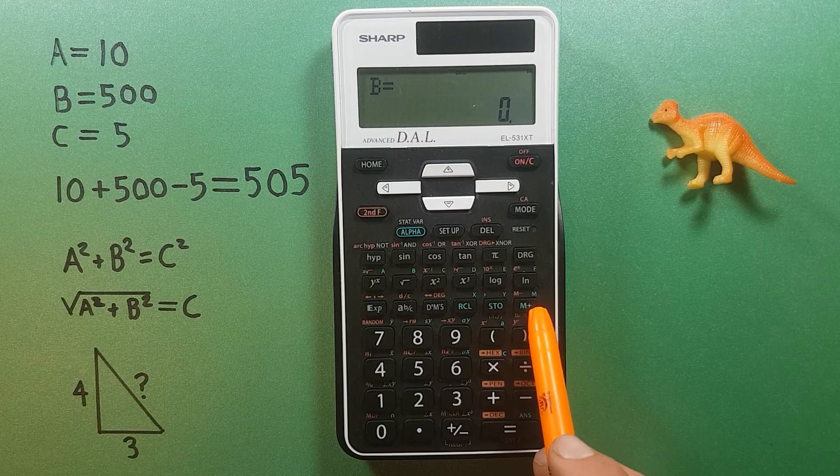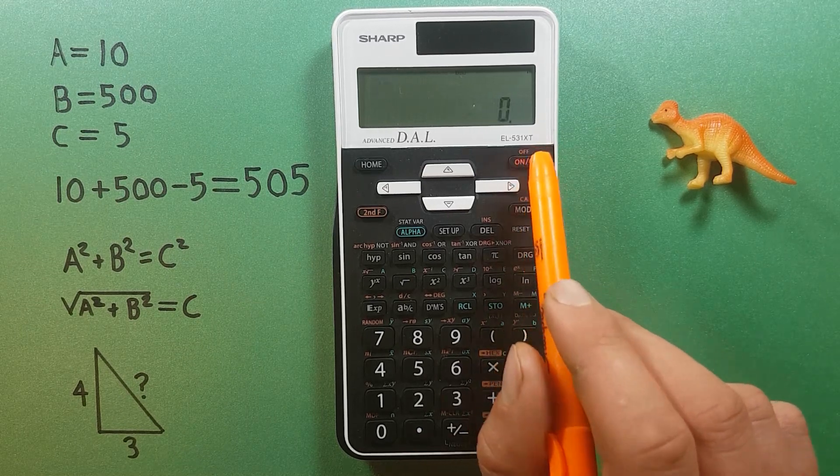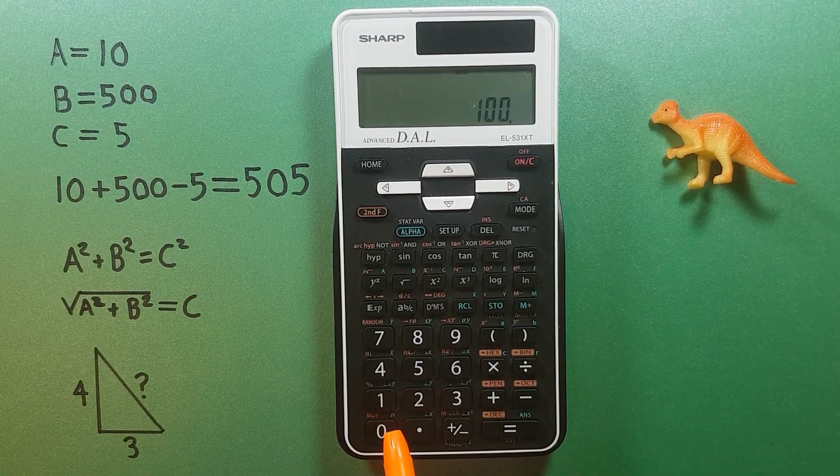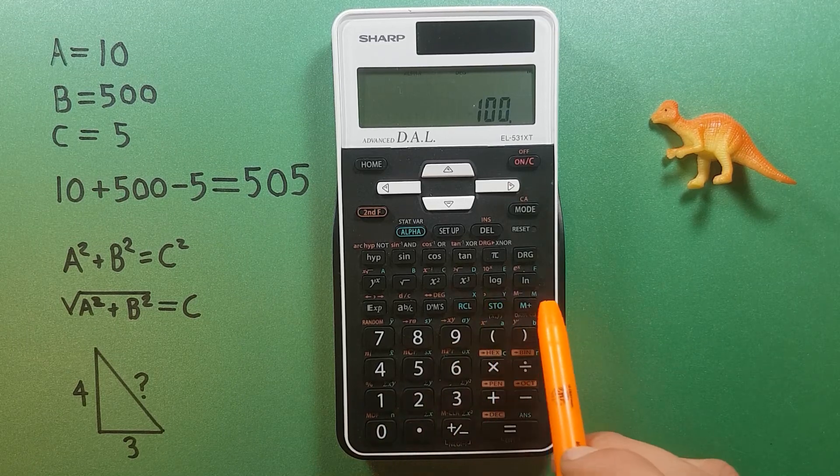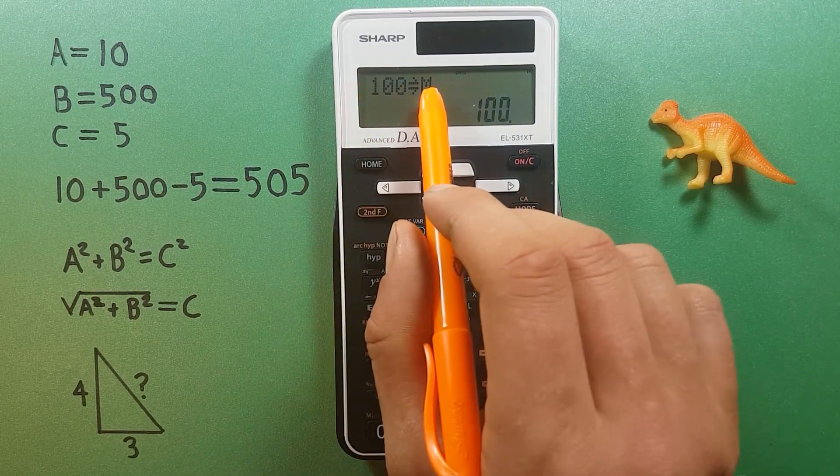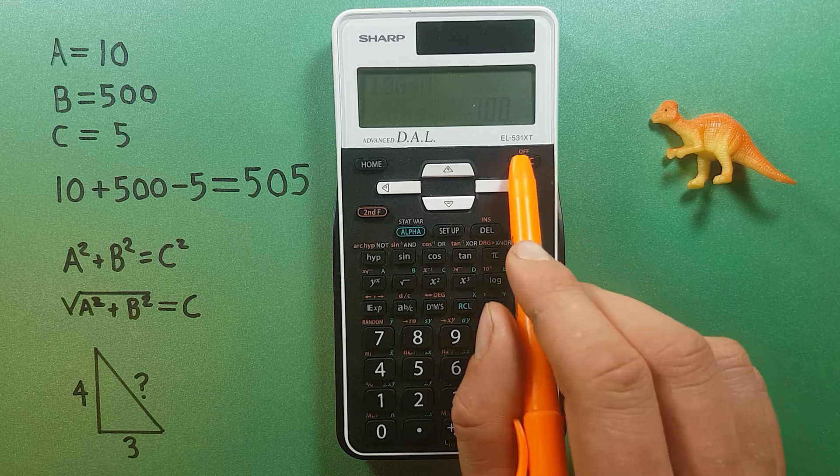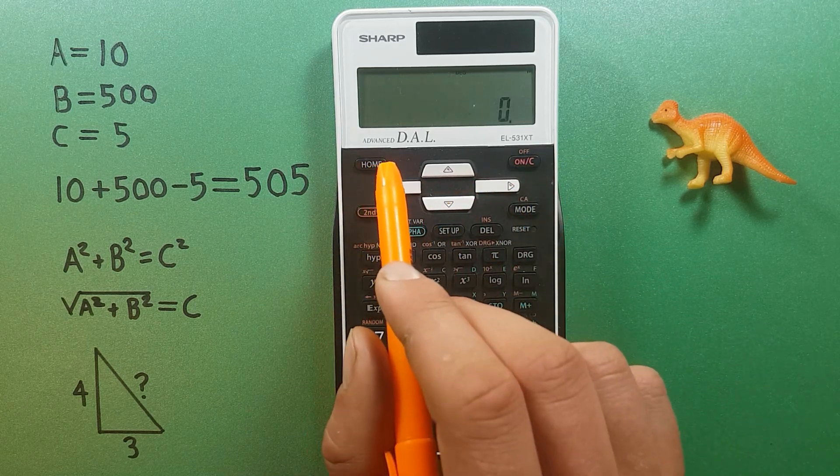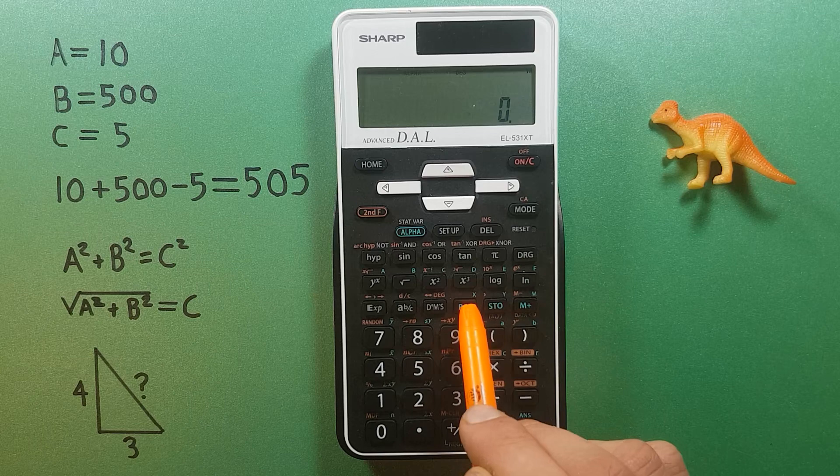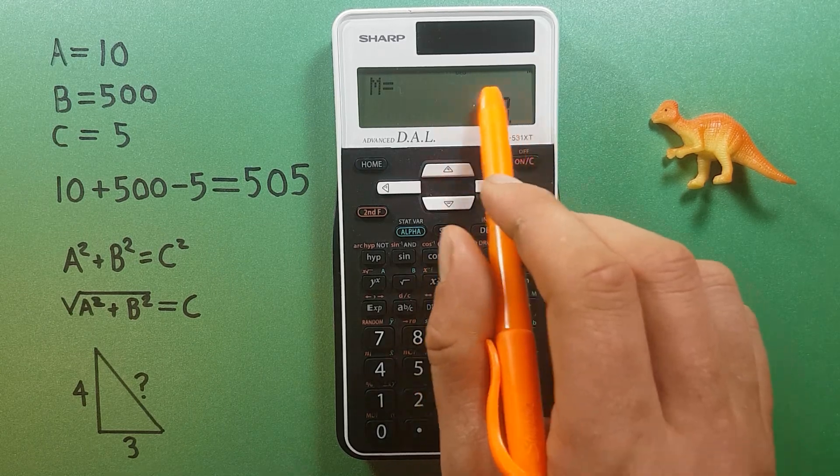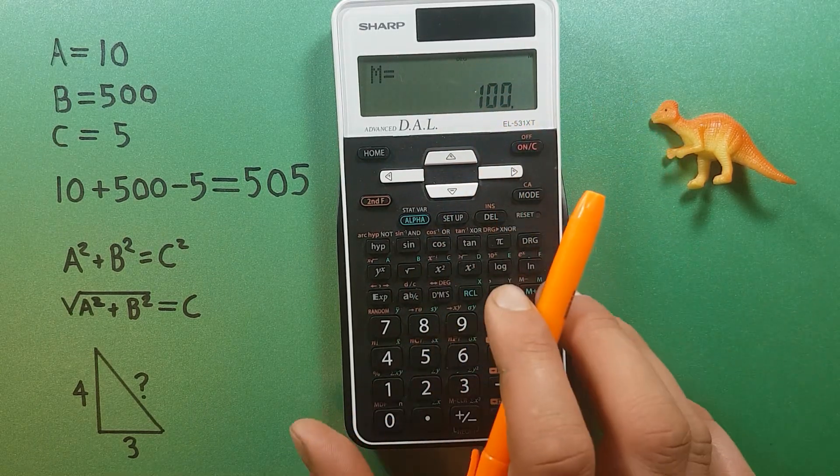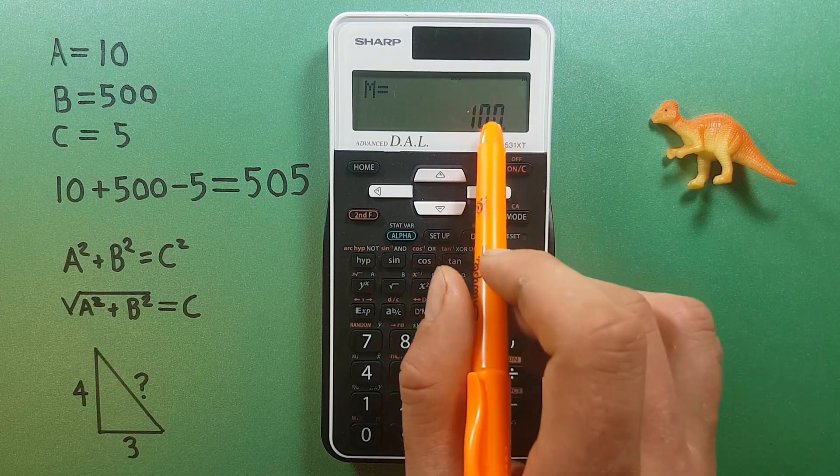But like I said, the M slot is independent and will be saved. Let's say we store 100 in our M. Then we press the home key, recall M, we see we still have our 100. So this slot will remain.